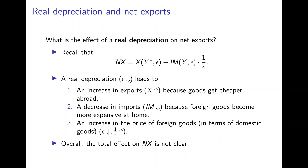And finally, the third effect is that there is an increase in the price of foreign goods because epsilon decreases, so 1 over epsilon increases, and this price effect would actually reduce net exports. So the total effect of the depreciation on net exports is a priori unclear.